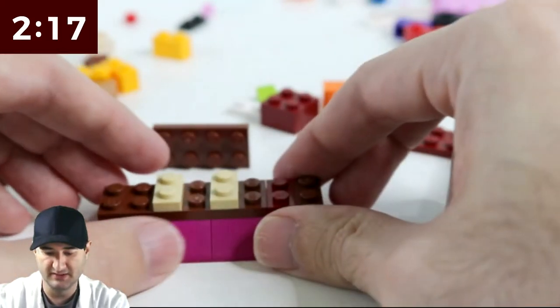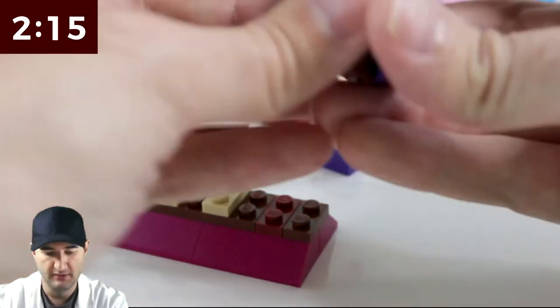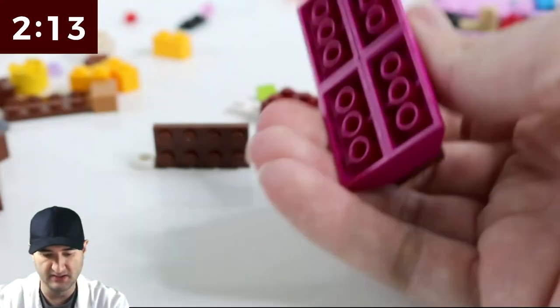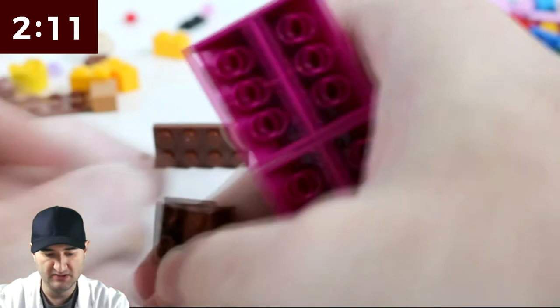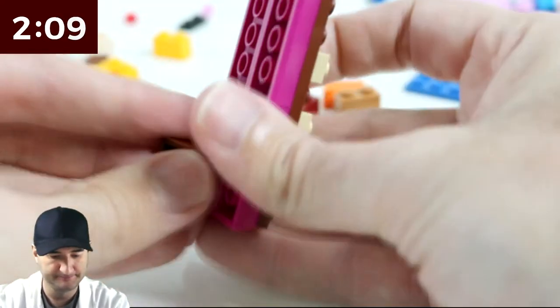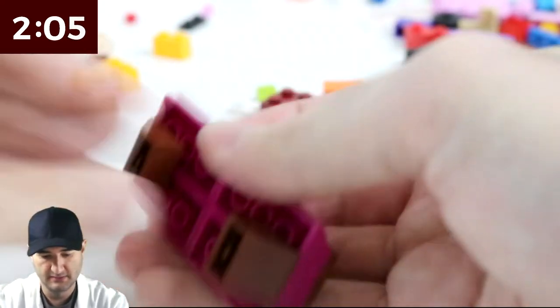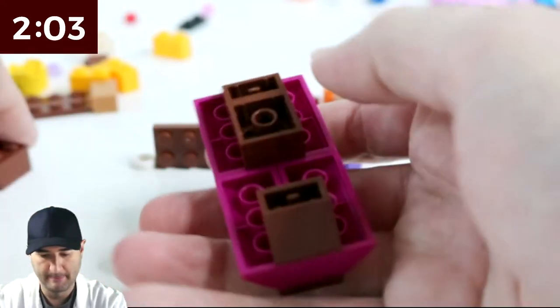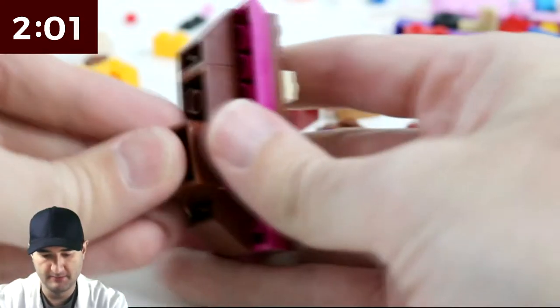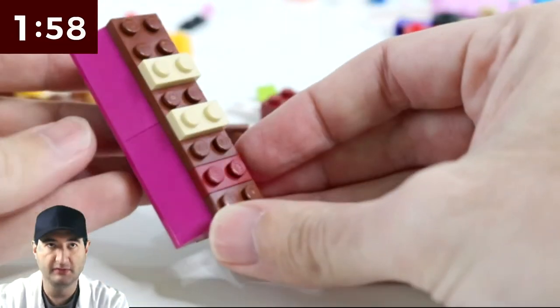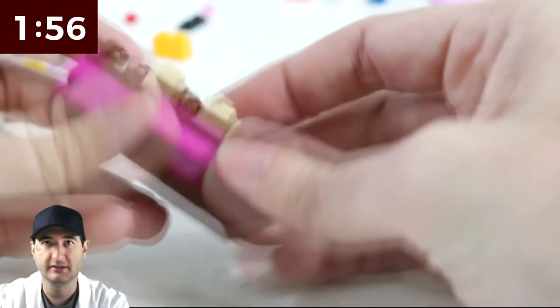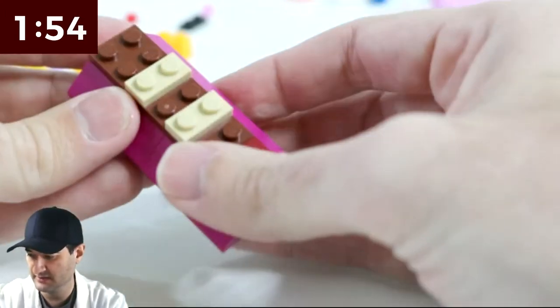So this is more of like the top of the football. And now we can just work on the bottom side of the football. Maybe it's all Brown on the bottom side. Like this. Does that look like a football? Not really. So let's see what else we can do.